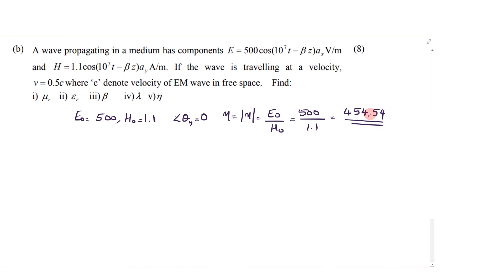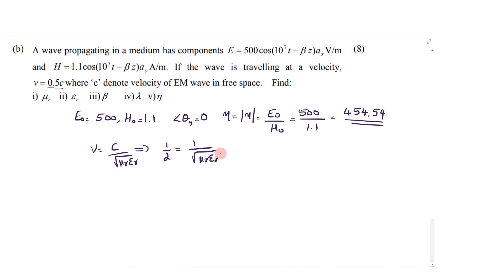Next, we have to calculate mu r and epsilon r. One option is v equals C divided by square root of mu r times epsilon r. This is one equation. The velocity is given as 0.5C, so 1 over 2 equals 1 divided by square root of mu r times epsilon r, giving mu r times epsilon r equal to 4. This is one relation we can find out.